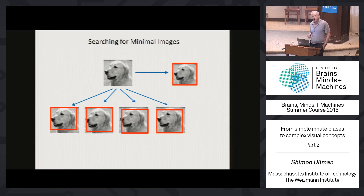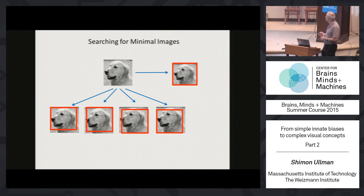I'll start with the human study, where you're looking for minimal, sort of atomic things in recognition. The experiment goes like this: you show a subject an image and ask them to recognize it — just produce a label. So this is a dog. If they say a dog, they recognize it.